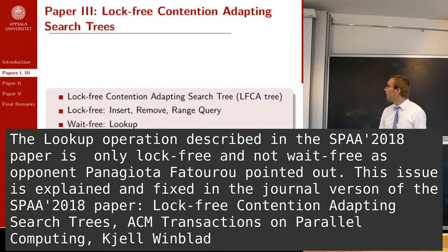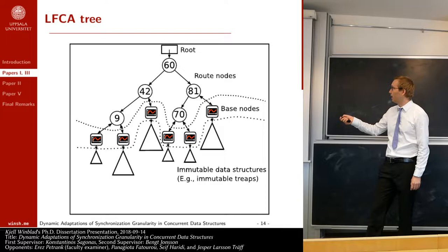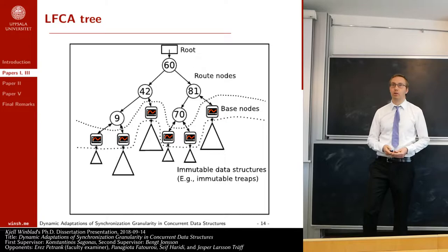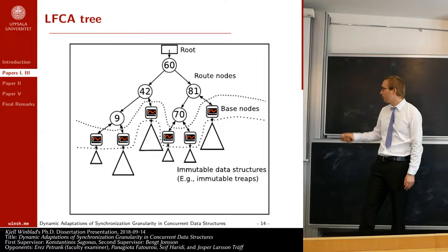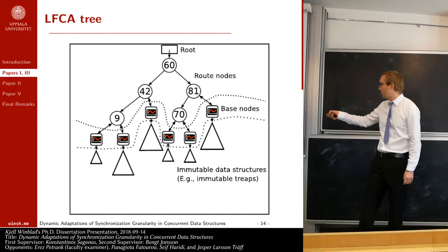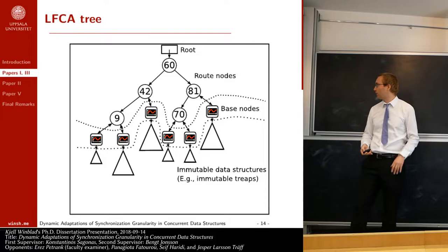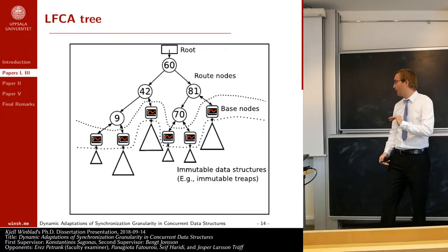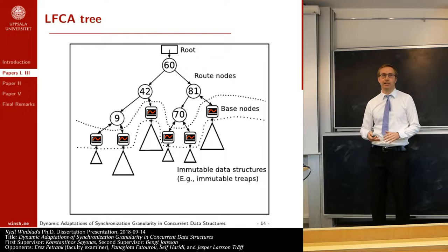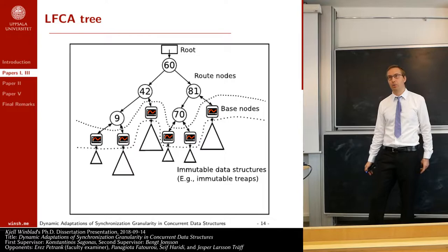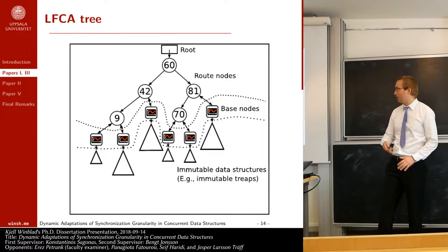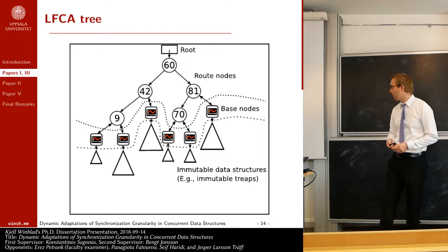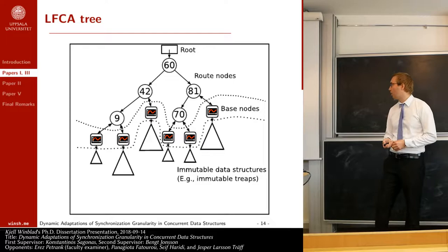All operations are linearizable. The structure of the LFCA tree looks very similar to the CA tree, but without any locks. An additional requirement is that the sequential data structures rooted in base nodes must be immutable — in my implementation I use immutable balanced search trees. This data structure also adapts its synchronization granularity similarly to the lock-based CA tree, but providing better progress guarantees requires somewhat more complicated algorithms.